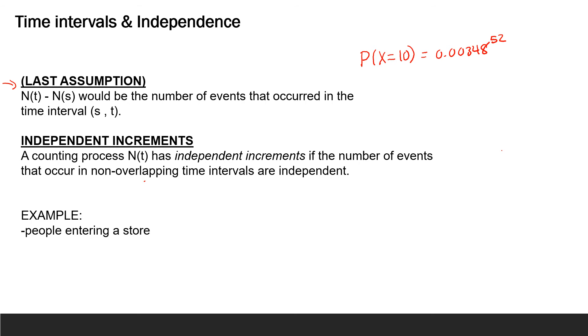So, think of it this way. The number of people entering our store by time 10 is independent of the number of people that enter the store between time 10 and time 15. It doesn't matter if the intervals are not equal length. They just don't overlap, and the number of events happening in one does not increase or decrease the probability of events happening in other intervals.